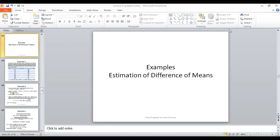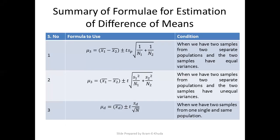We discussed in that lecture that there are three ways to find the difference of means estimation. Case number one is where we have samples taken from two separate populations but they have the same or equal variance, and in that case we make use of equation number one. The difference of mean, which is mu1 minus mu2, is given by mu3. The second case is when the samples are taken from two separate populations but they have unequal variances, and the difference of means mu1 minus mu2 equivalent to mu3 is given by the equation in row 2 of the table.